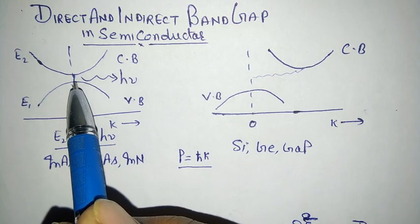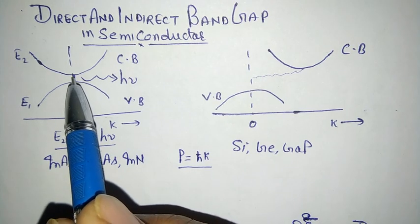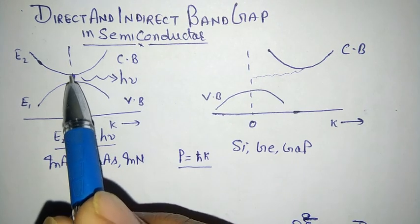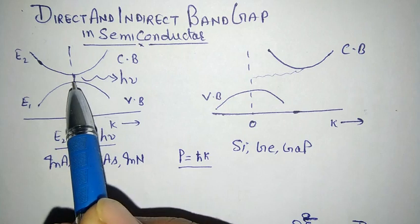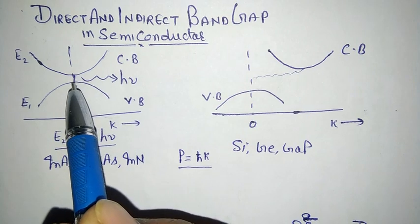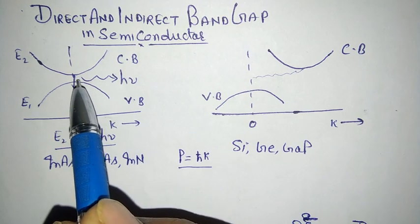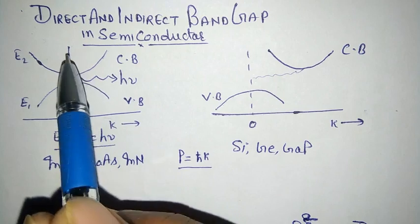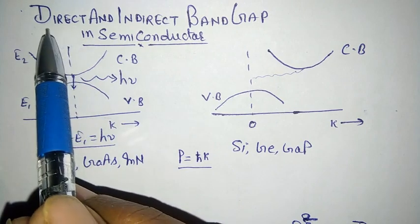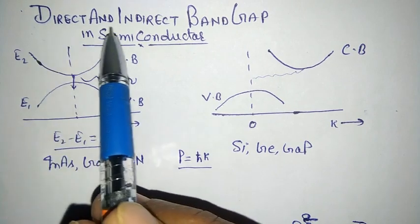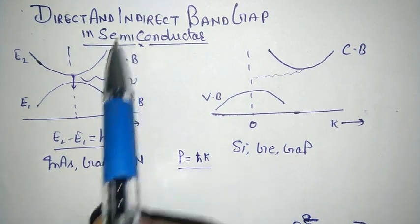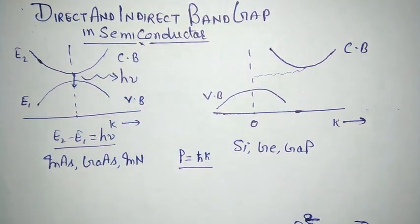There is no change in momentum during the transition from the upper state to the lower state. When there is no change in momentum and the transition is radiative, this is known as a direct band gap semiconductor.